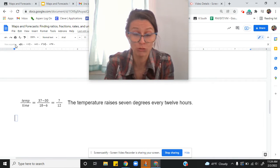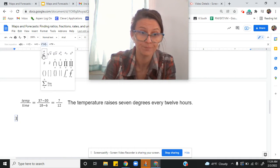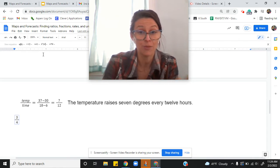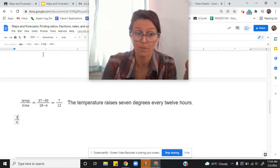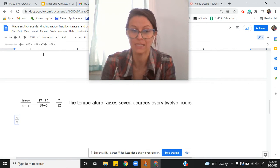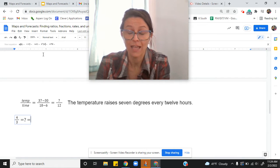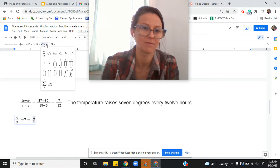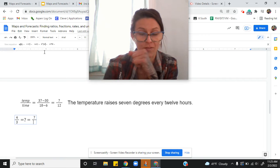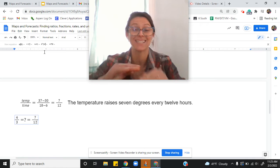Let's try to see, is it true that three over four - oops - three degrees temperature warming over four hours, is that equal to seven degrees changing over 12 hours?